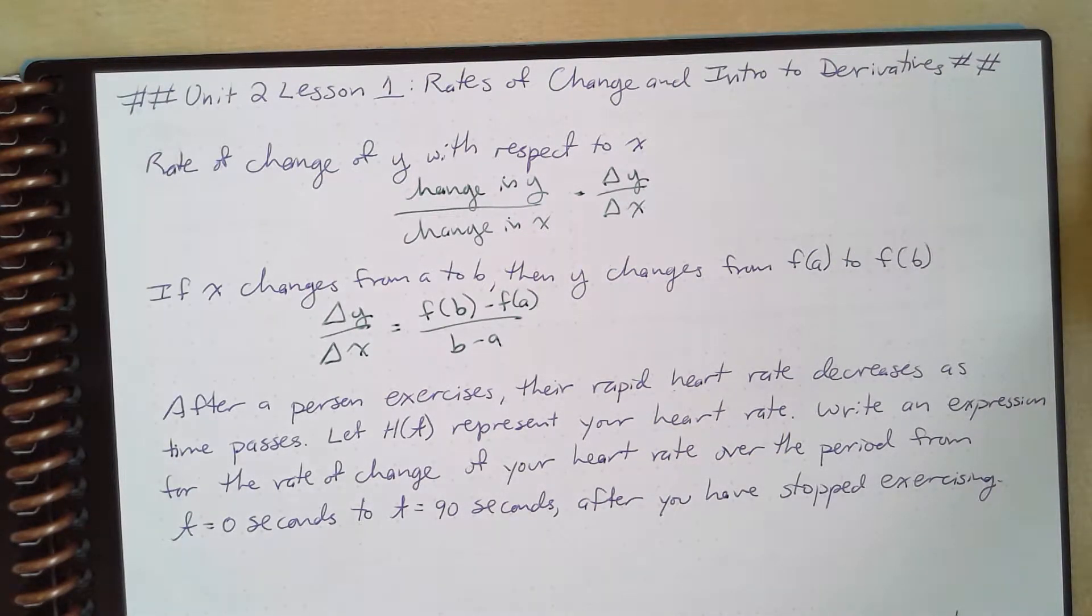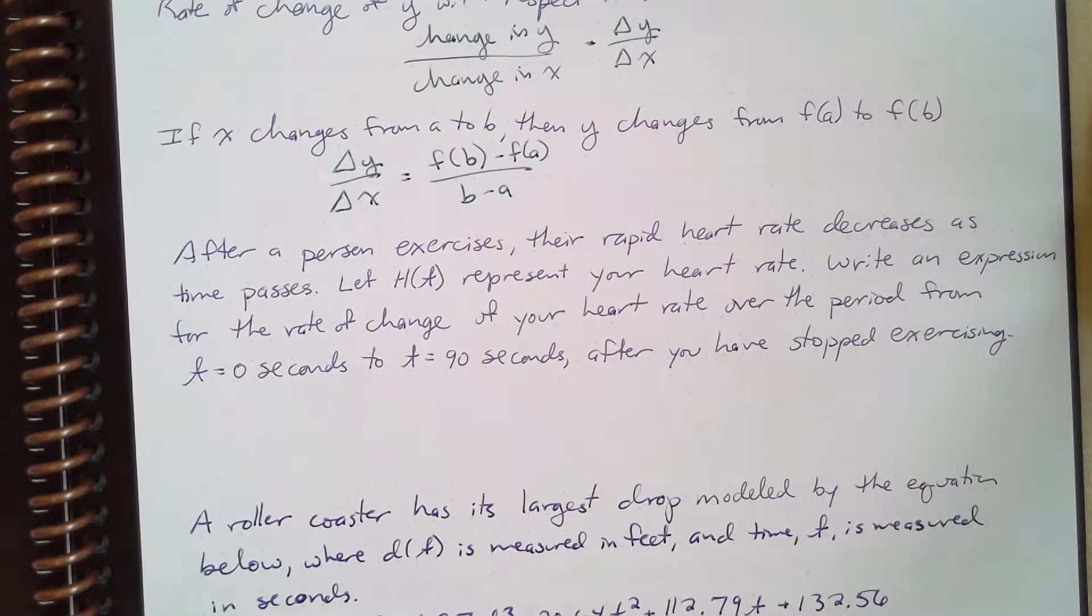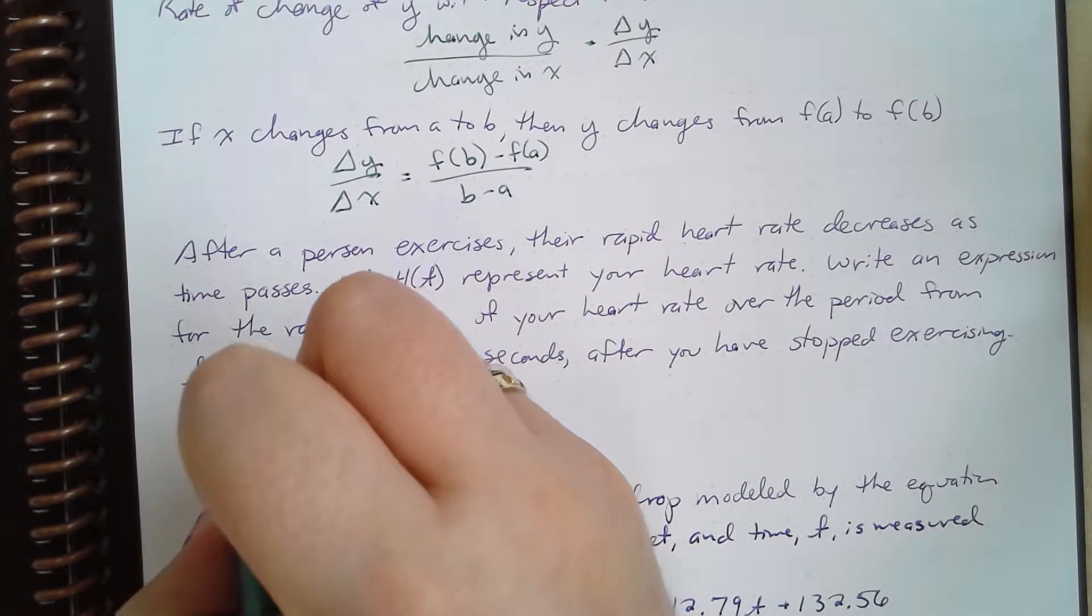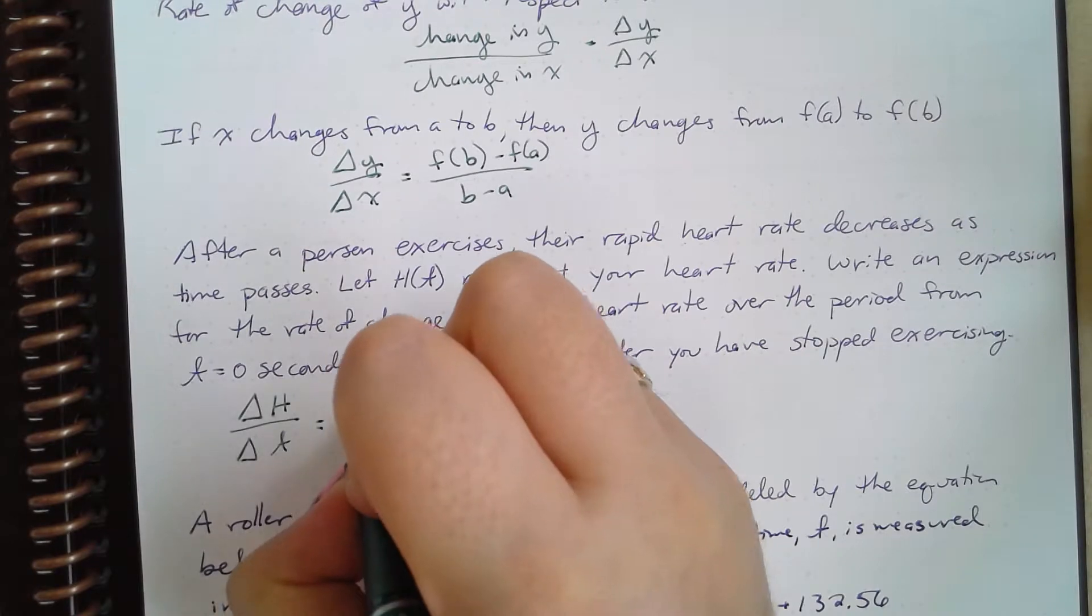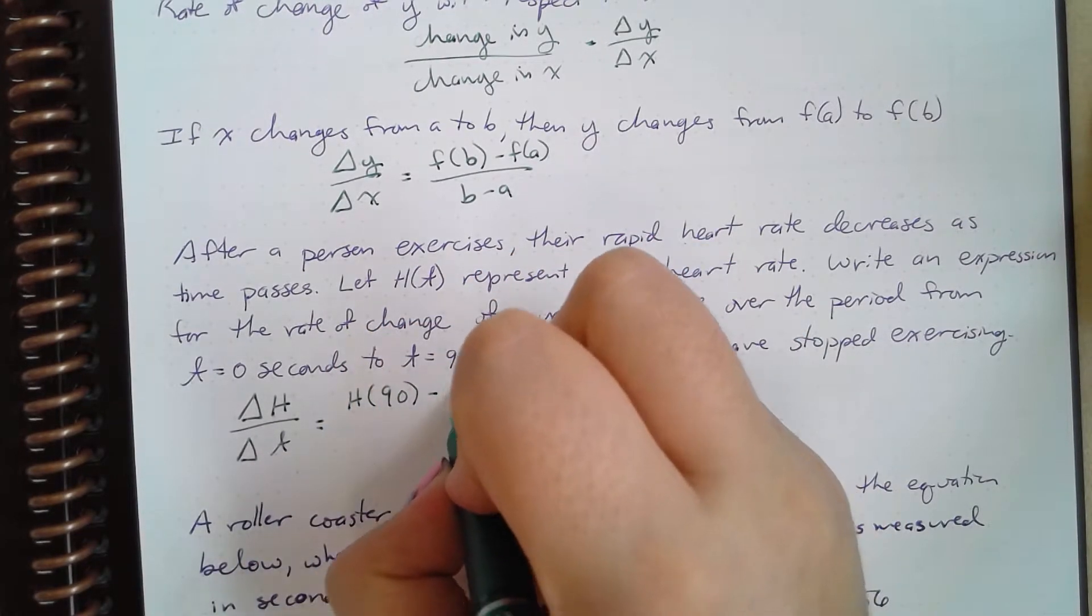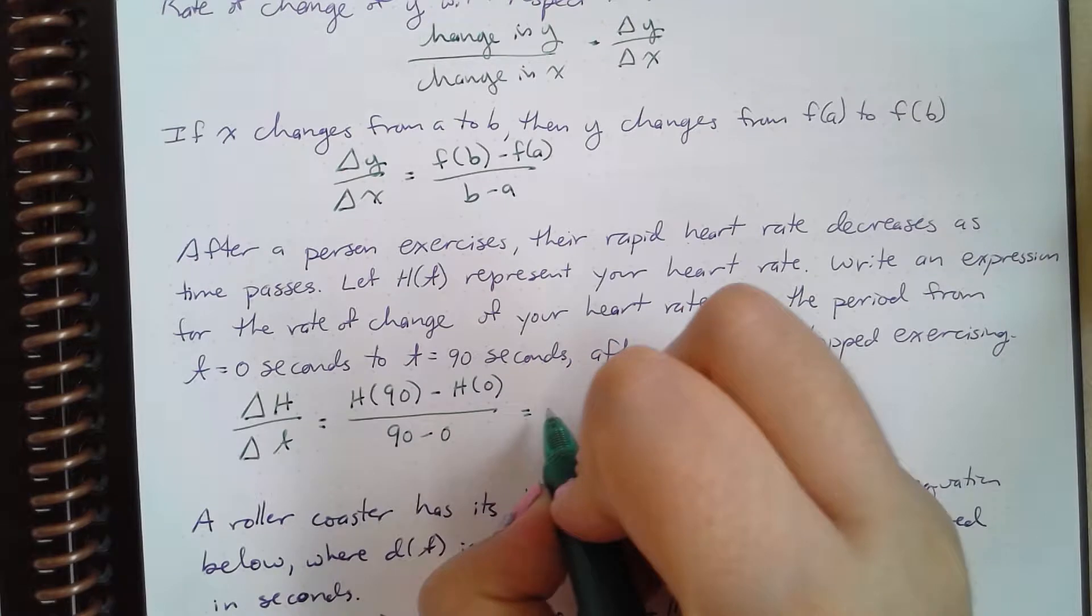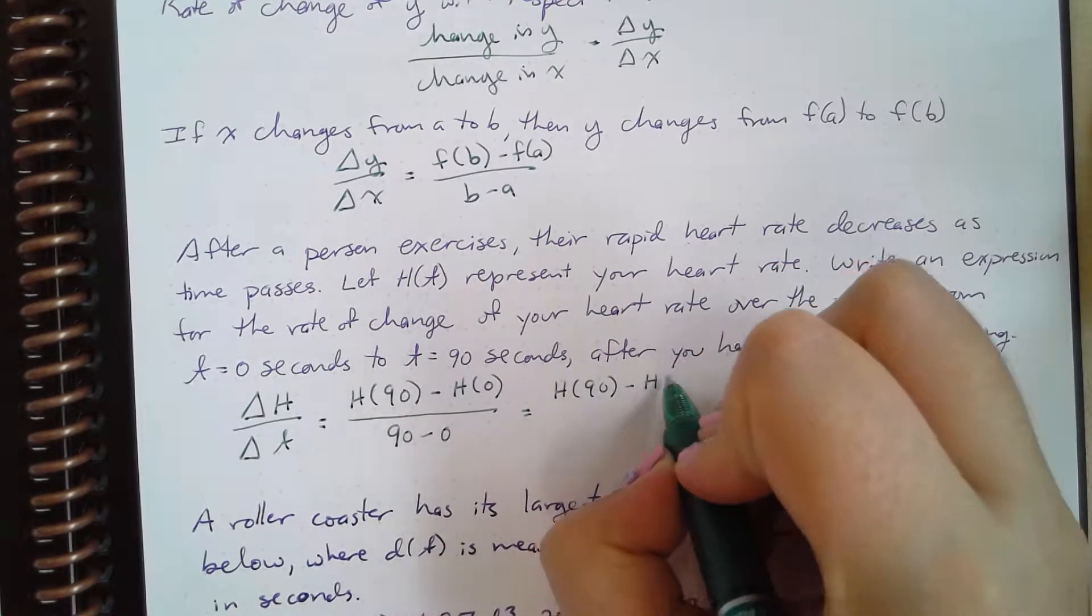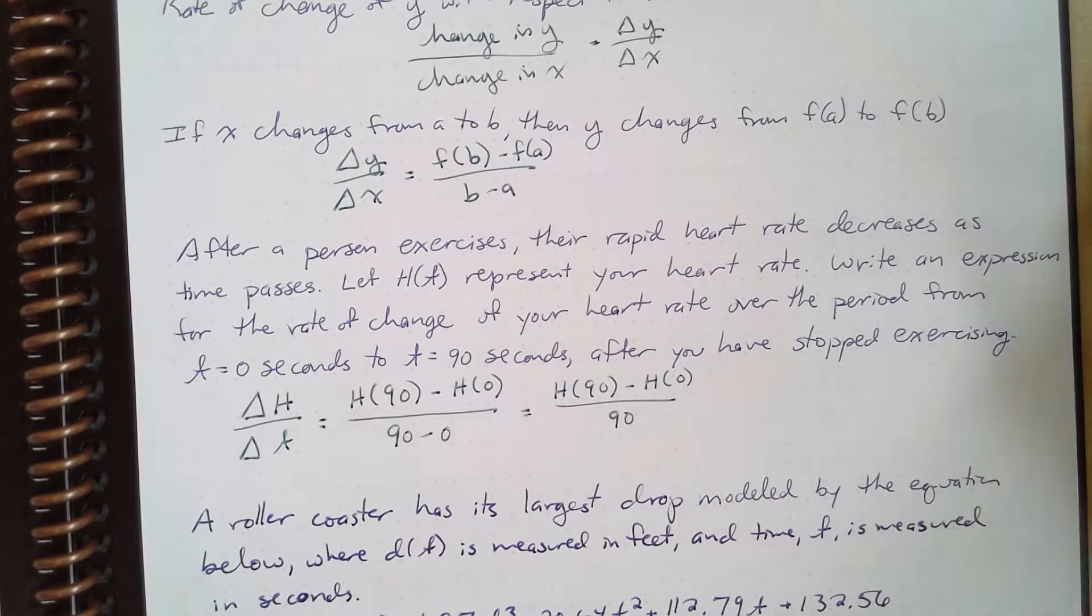So let's take slope and apply it to some situations here. After a person exercises, their rapid heart rate decreases as time passes. Let h(t) represent your heart rate. Write an expression for the rate of change of your heart rate over the period from t=0 seconds to t=90 seconds after you have stopped exercising. Well, to talk about that, our change of our heart rate with respect to time is just going to be our heart rate at 90 seconds minus our heart rate at 0 seconds divided by 90 minus 0, which if we wanted to simplify, we could write as h(90) minus h(0) over 90.